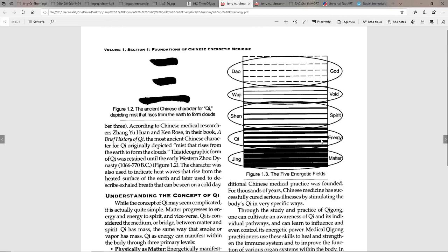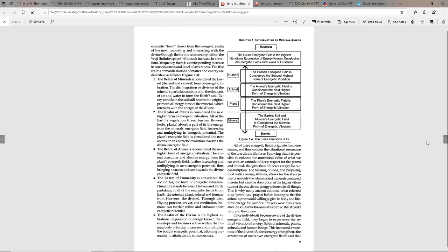If you look at this, the five energetic fields: you could relate jing to matter, chi to energy, shen to spirit, wuji is the void, and then the Dao - you could view as prime creator or God. There's different ways of looking at this as well on different systems.